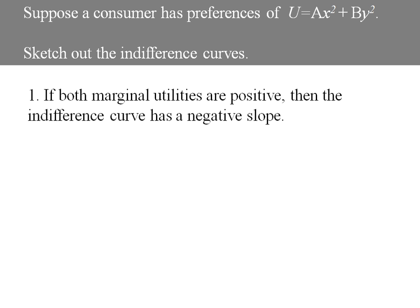If both marginal utilities are positive, then this indifference curve is going to have a negative slope. So the marginal utility of x, which is the partial derivative of utility with respect to x, is 2ax. Now this is positive for any positive values of x and y that I substitute in.